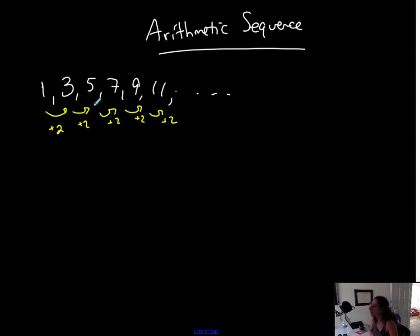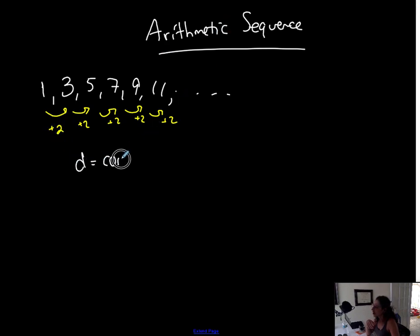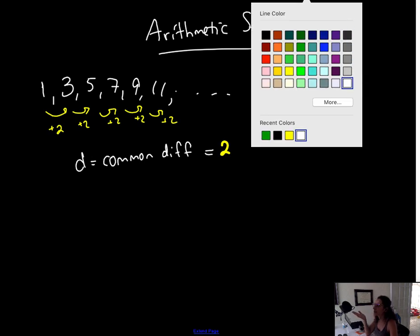So when I'm adding a number — which is the same as subtracting a number — when I'm adding a specific number to each term of the sequence to get to the next one, and that number is constant throughout the sequence, I have an arithmetic sequence. That number that we're adding is called d, the common difference. And the common difference in this particular example would be positive two, because I'm adding two to each term to get to the next one.